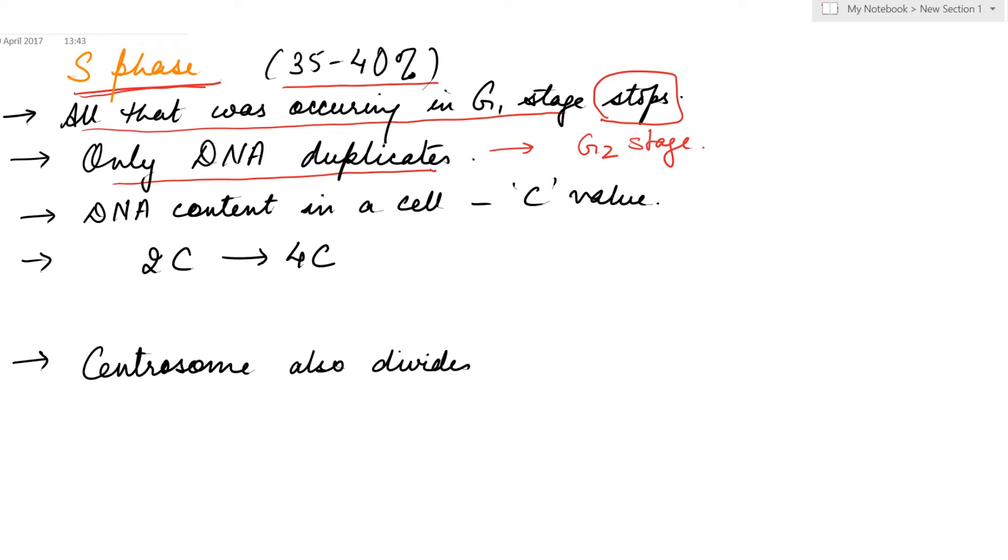As the DNA duplication completes, the cell will enter the G2 stage. During the S phase, the DNA content of the cell doubles. DNA content in a cell is referred to as its C value. When a cell has entered the interphase, its DNA content is 2C, but once it has passed through the synthetic phase it becomes 4C. The 2N cell now becomes 4N. Also during this stage, the centrosome divides, meaning two more pairs of centrioles are formed.